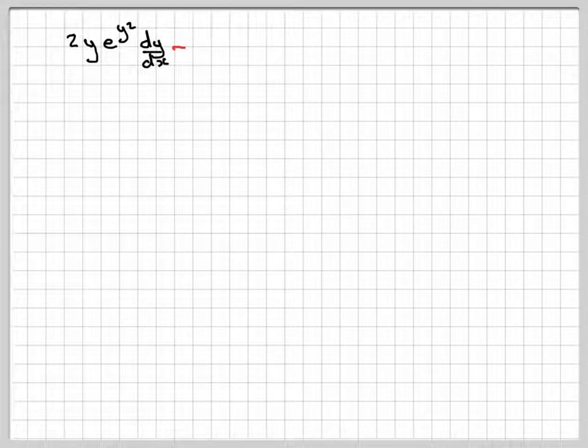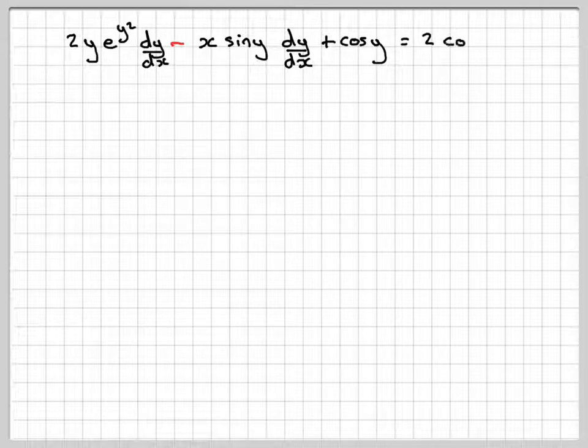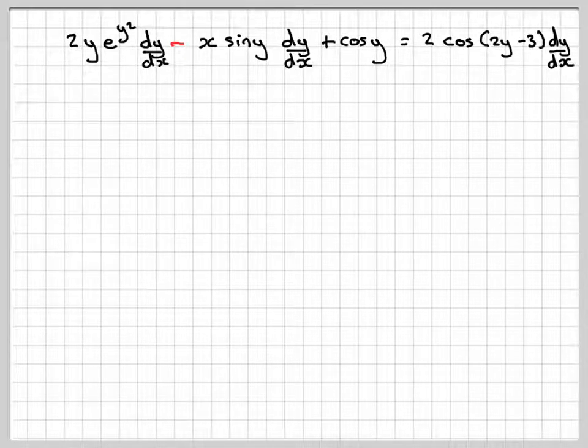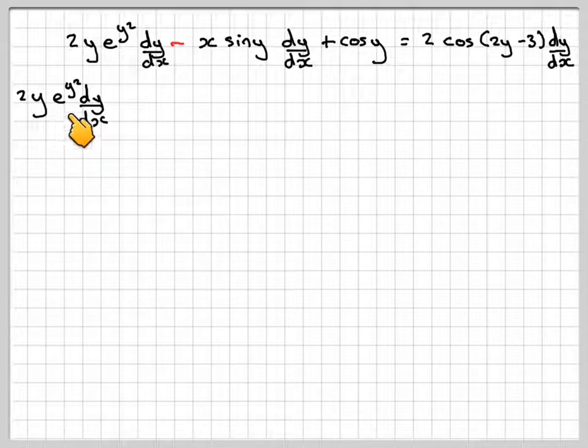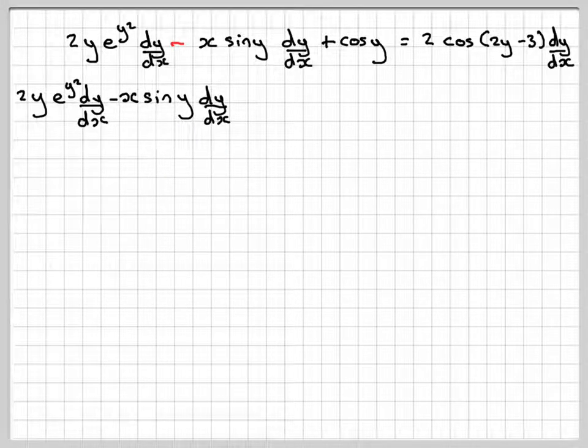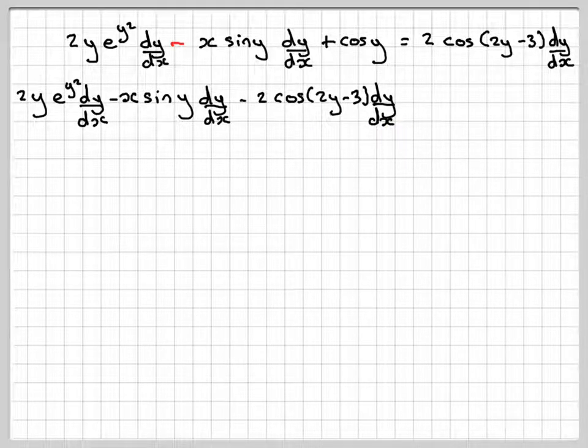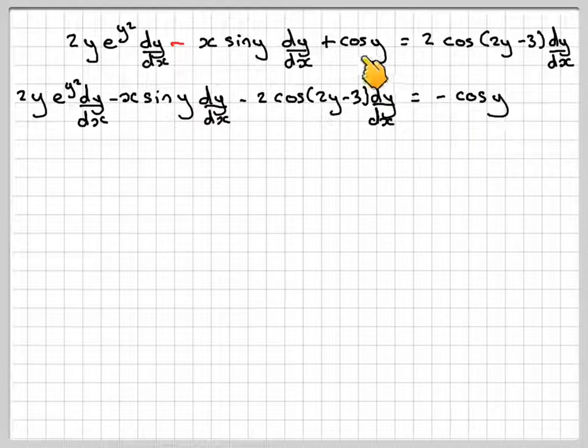Writing that line out again. Putting the minus sine here in the front. So we get 2y e to the y squared dy/dx. We're going to collect everything with dy/dx on one side. Minus x sine y dy/dx minus 2 cos of 2y minus 3 dy/dx is equal to minus cos y.